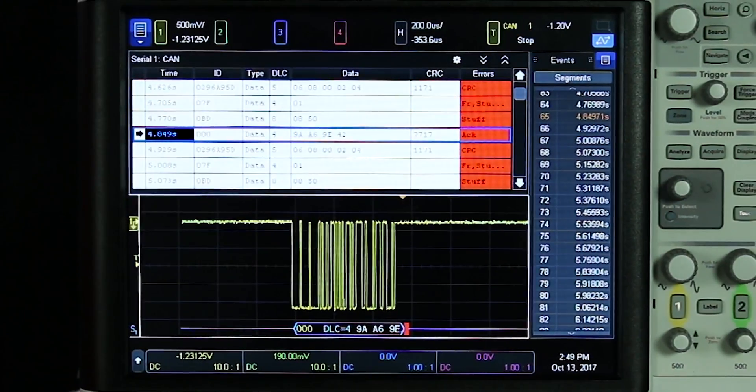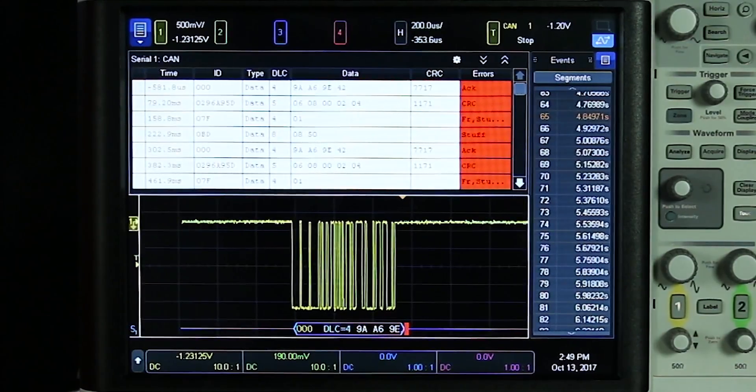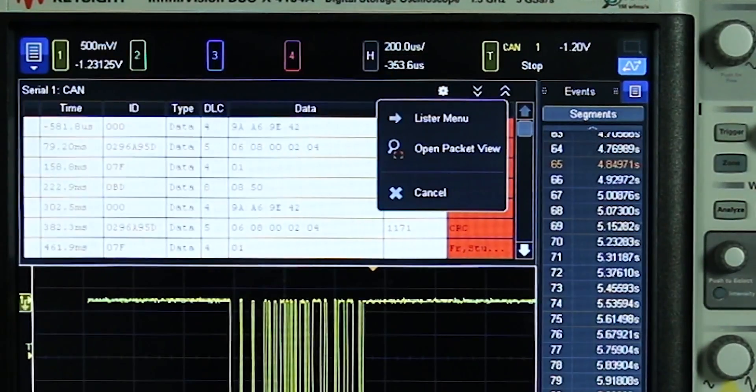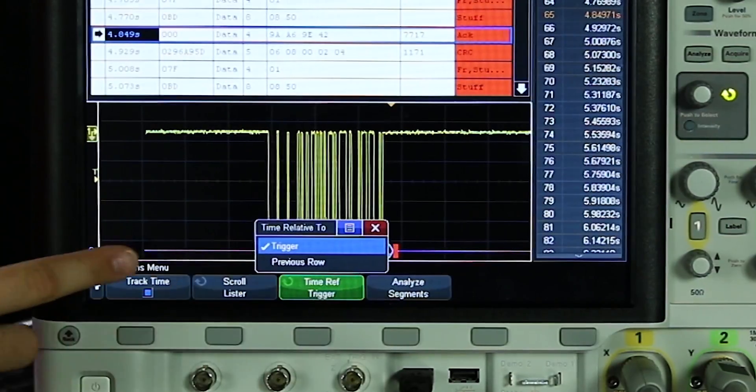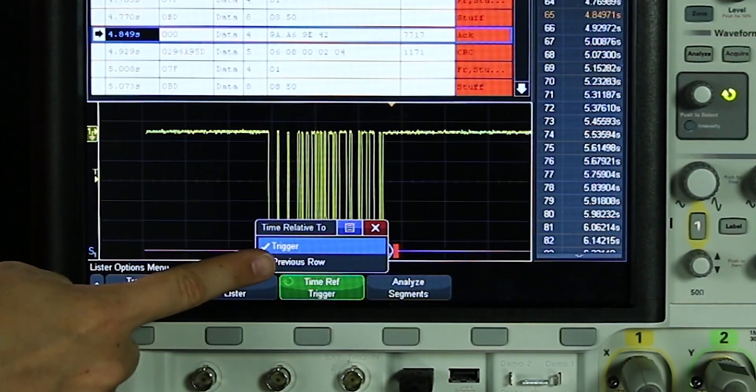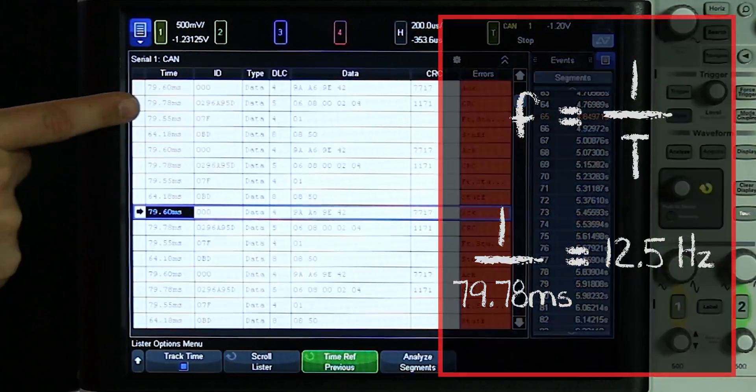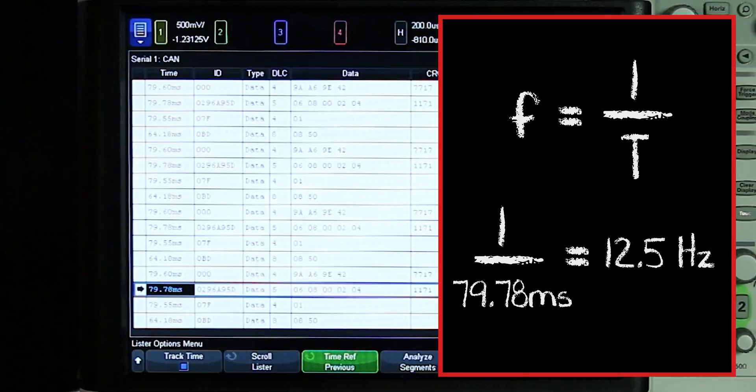Another great thing you can do with the lister is change the reference time for the time tags. So right now you can see that the time tags are respective to the first segment captured. Well if I press on the gear icon up here we can go into the lister menu then go into options and then you can see here we can change the time to be relative to the previous error. You can see how this changed in the lister up here and now this gives us insight into the frequency of each of these pulses and we can understand more about the device.